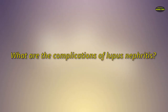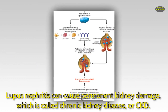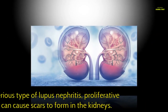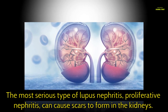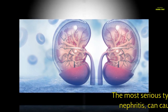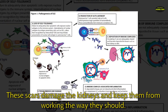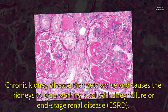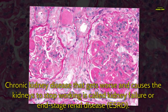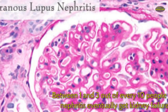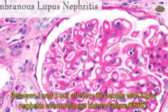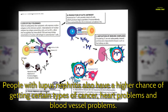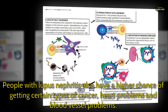Lupus nephritis can cause permanent kidney damage, which is called chronic kidney disease, or CKD. The most serious type, proliferative nephritis, can cause scars to form in the kidneys, keeping them from working properly. Chronic kidney disease that worsens and causes the kidneys to stop working is called kidney failure or end-stage renal disease, ESRD. Between one and three out of every ten people with lupus nephritis eventually get kidney failure. People with lupus nephritis also have a higher chance of getting certain types of cancer, heart problems, and blood vessel problems.